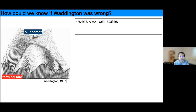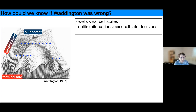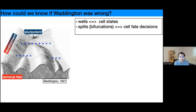The landscape depicts cell states as wells in a connected landscape. The cell is like a ball at the top, and it can flow down into different states from being pluripotent into some terminal fate. Along the way are these splits, which we often think of as bifurcations or cell fate decisions — changes in the underlying landscape.